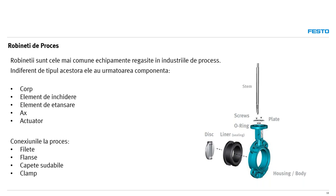Din punct de vedere al conexiunii la proces, sunt extrem de variate, diferă de la industrie la industrie și de la aplicație la aplicație. Cele mai comune ar fi filetele — interior sau exterior — flanșele, în foarte multe variante, capetele sudabile și clemele. Fiecare dintre aceste conexiuni are avantajele sale în diferite contexte și industrii.